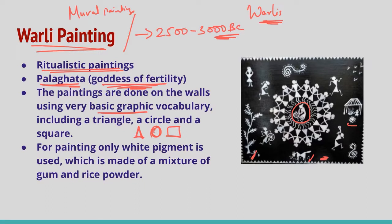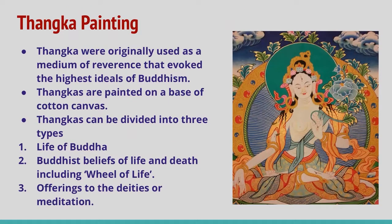For painting, only white pigment is used, which is made of a mixture of gum and rice powder. The wall paintings are usually done for auspicious occasions like harvest and wedding. With time, the popularity of Warli paintings has resulted in them being painted on cloth on a base of red or black background using white poster color.